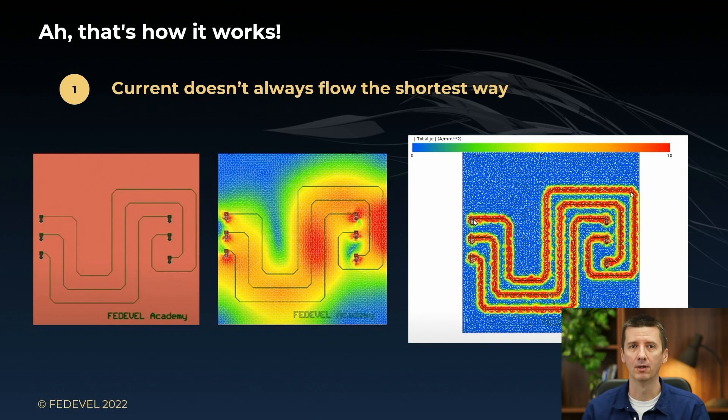Now, what does it mean return current? At school, we are usually told that current flows, for example, from battery through a switch to a light and then it somehow returns back to the battery. And many engineers keep thinking this way even after they start designing boards professionally. I'm going to be honest, when I started designing boards, I was thinking exactly the same way. Current goes there and return current goes back.